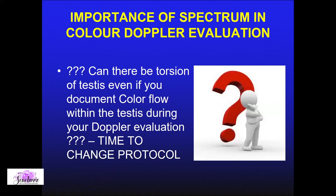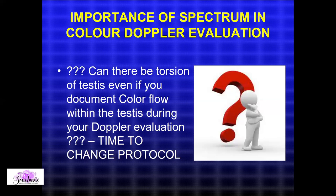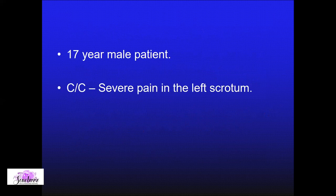Can there be a theoretical situation where there is torsion of the testis and you are still seeing color flow? Yes, it can happen. The whole importance of taking spectral waveforms within the testicular parenchyma is for this reason — in all cases of incomplete torsions or torsions less than 180 degrees, spectral analysis is one of the most critical ways to evaluate acute scrotum.